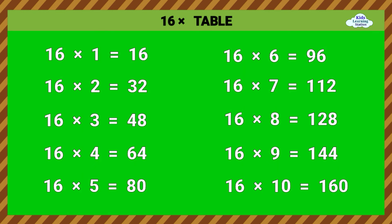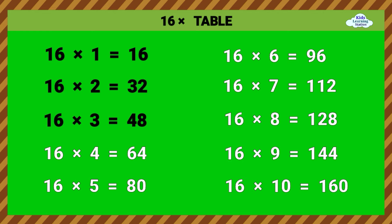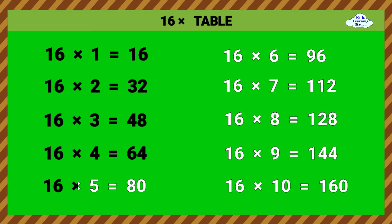16 times table. 16 times 1 equals 16. 16 times 2 equals 32. 16 times 3 equals 48. 16 times 4 equals 64. 16 times 5 equals 80.